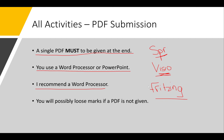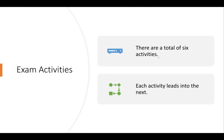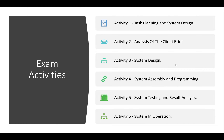The learning outcomes are: produce a technical specification and design for a microcontroller system to solve a problem; develop and test a software and hardware solution; and project-manage the development lifecycle and present the operation of the system. There are six activities in total, each leading into the next. Activity one is planning and system design; activity two is analysis of the client brief — you'll receive a brief from a client and analyze what needs to be done.